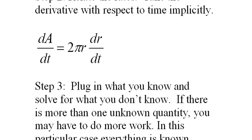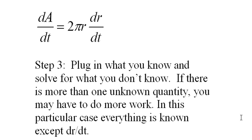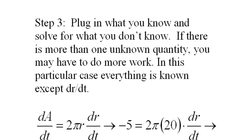Step three, plug in what you know and solve for what you don't know. If there's more than one unknown quantity, you may have to do more work. In this particular case, everything is known except dr/dt, which is what we're looking for, the change in the radius with respect to time.